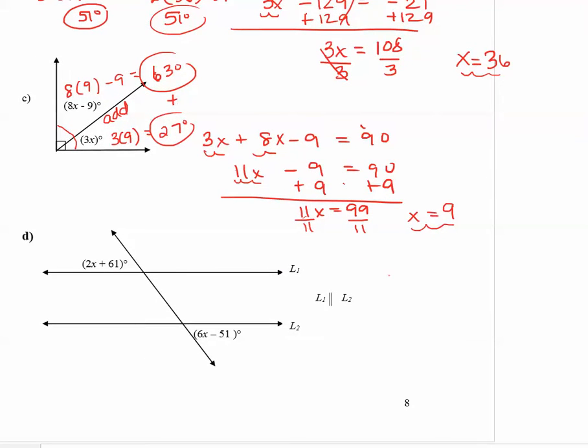Our last diagram shows two parallel lines, line 1 and line 2, cut by a transversal line in the middle. And the first expression 2x plus 61 degrees is on the top left side of the line. And the 6x minus 51 degrees is on the very bottom right side.